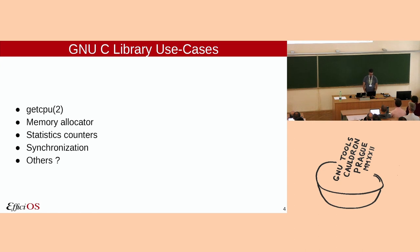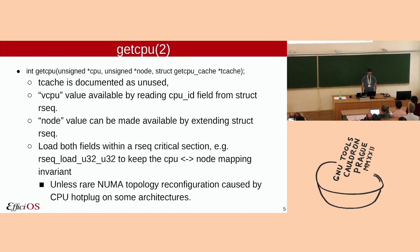Here are the use cases I pinpoint that are ahead of us for the GNU C library. One is using RSEC for getCPU. The CPU number we have very quickly from the rsec structure — the per-thread structure. The node ID is something I want to add to struct rsec, so that getCPU could be implemented purely in user space from a glibc perspective. We want to load both values within an RSEC critical section, so that the mapping between that pair stays invariant for the whole lifetime of the process.